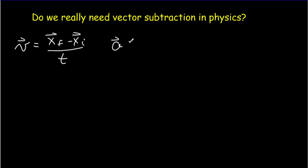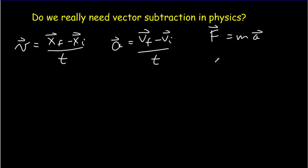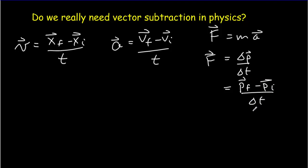Another definition: acceleration is the rate of change of velocity — the final velocity minus the initial velocity, the subtraction of vectors divided by time. And perhaps the most famous equation in all of physics, f equals ma, really only works if you have a constant mass. The more general equation for Newton's second law is that f is equal to the rate of change of momentum: p final minus p initial divided by how much time has elapsed. So once again, you're subtracting vectors — three of the most fundamental equations in all of physics all use vector subtraction.